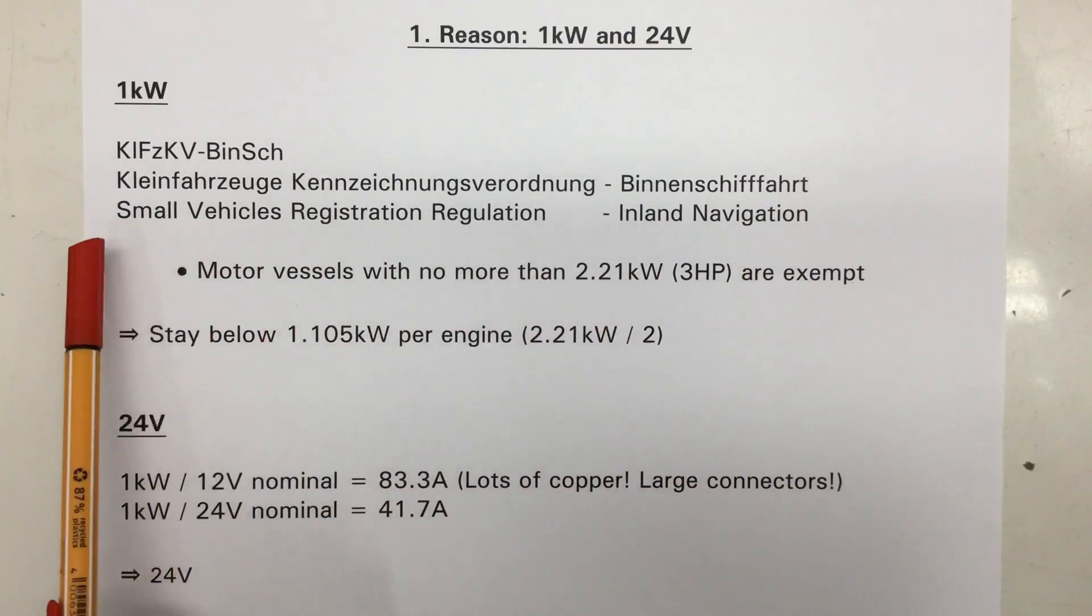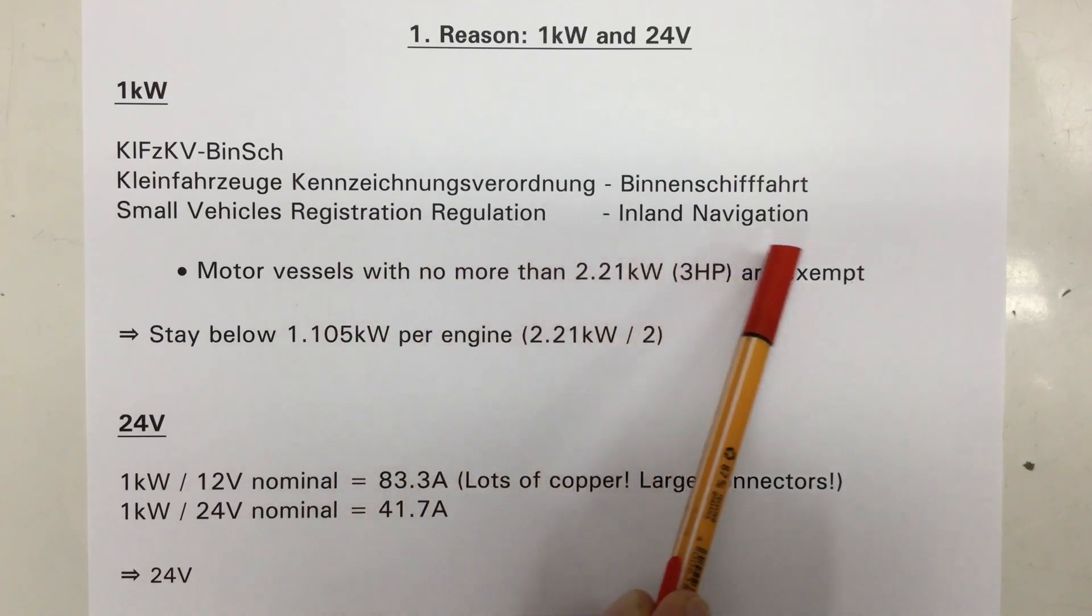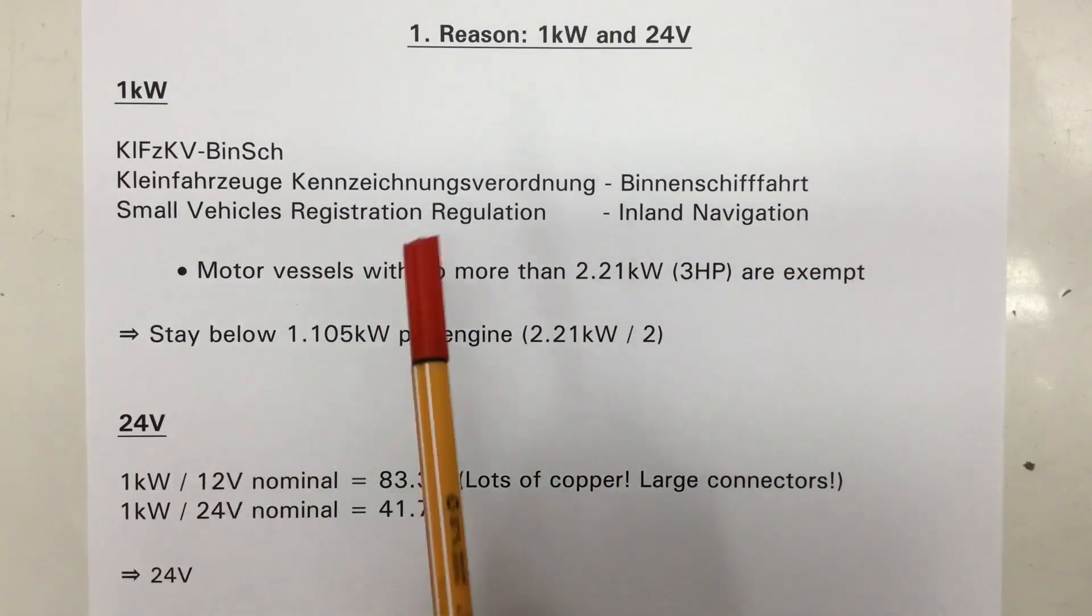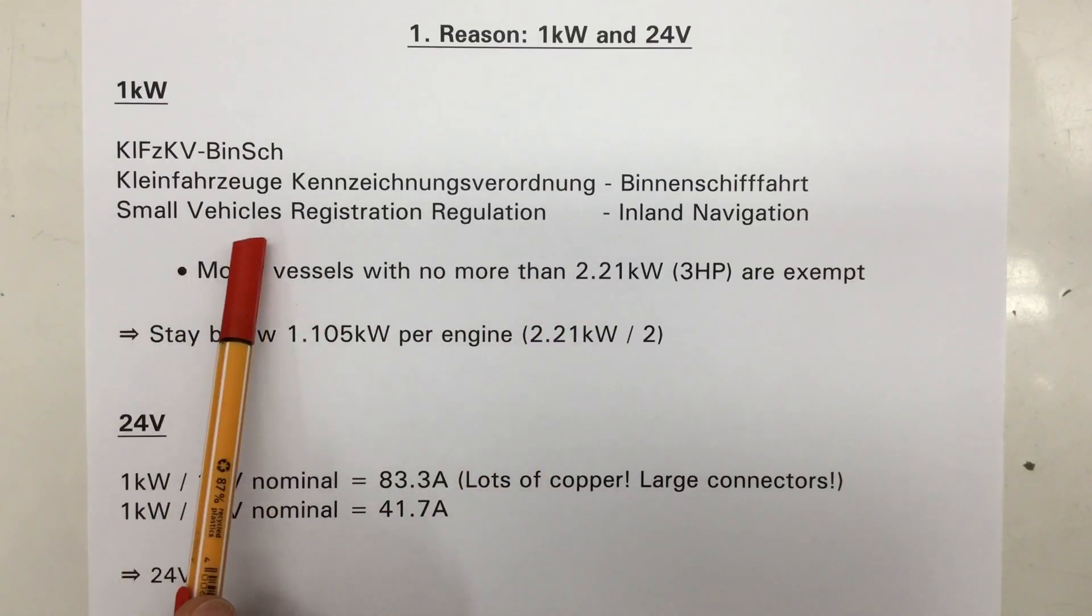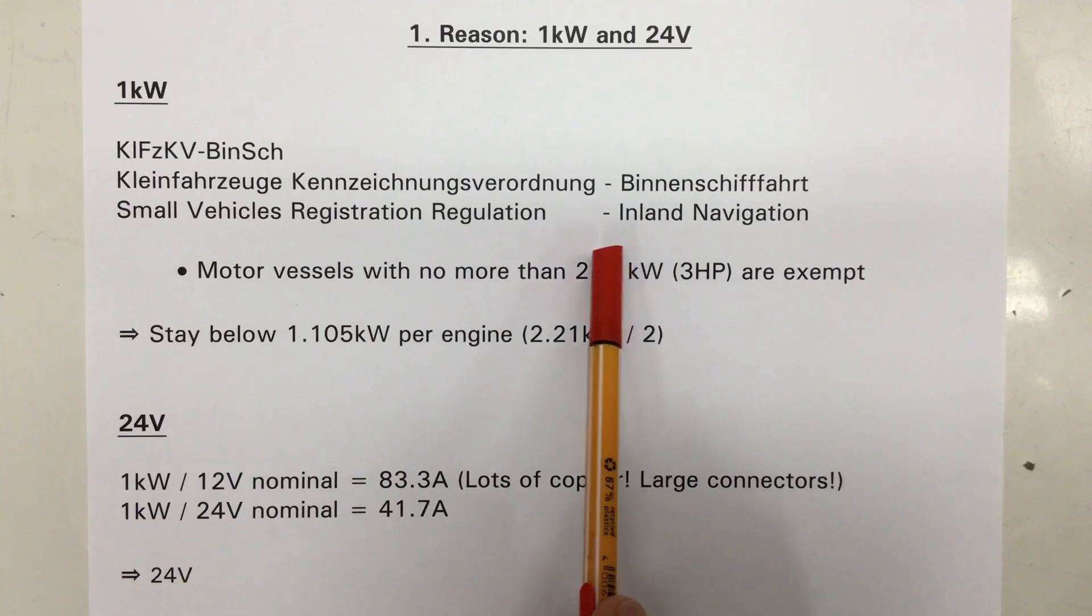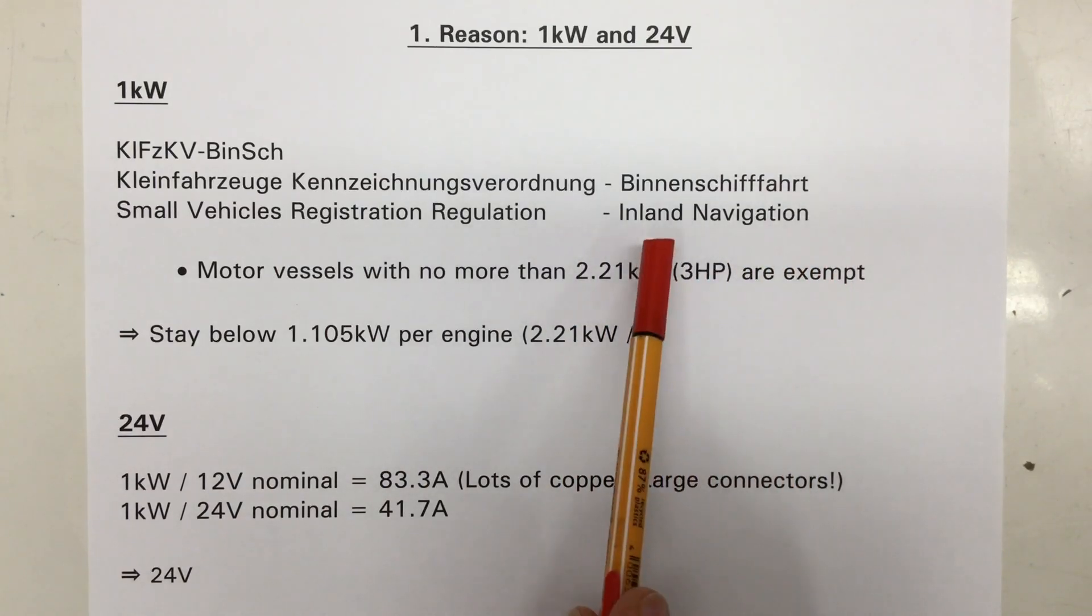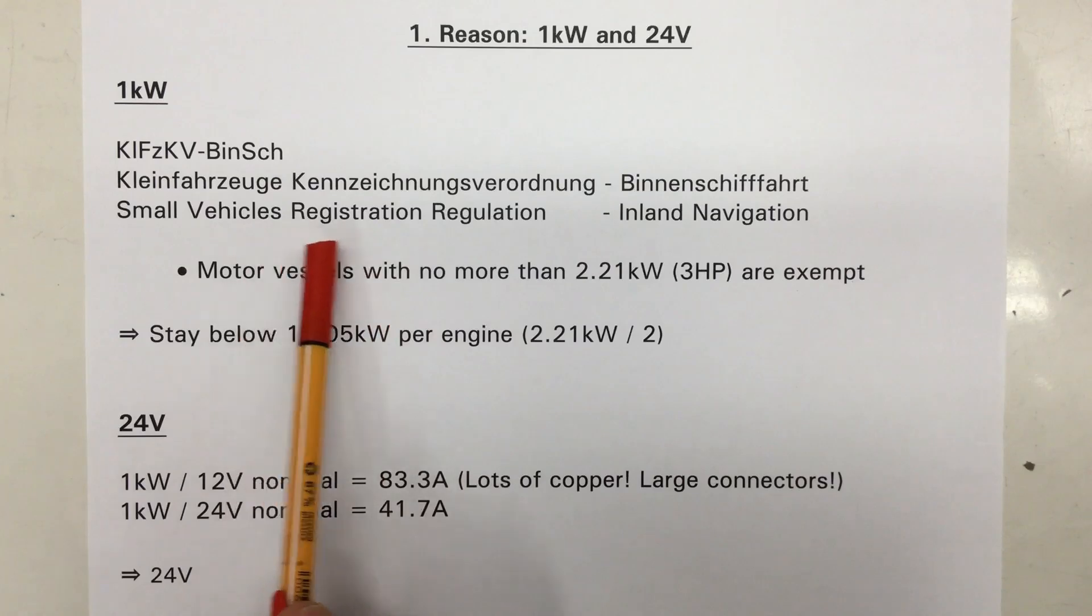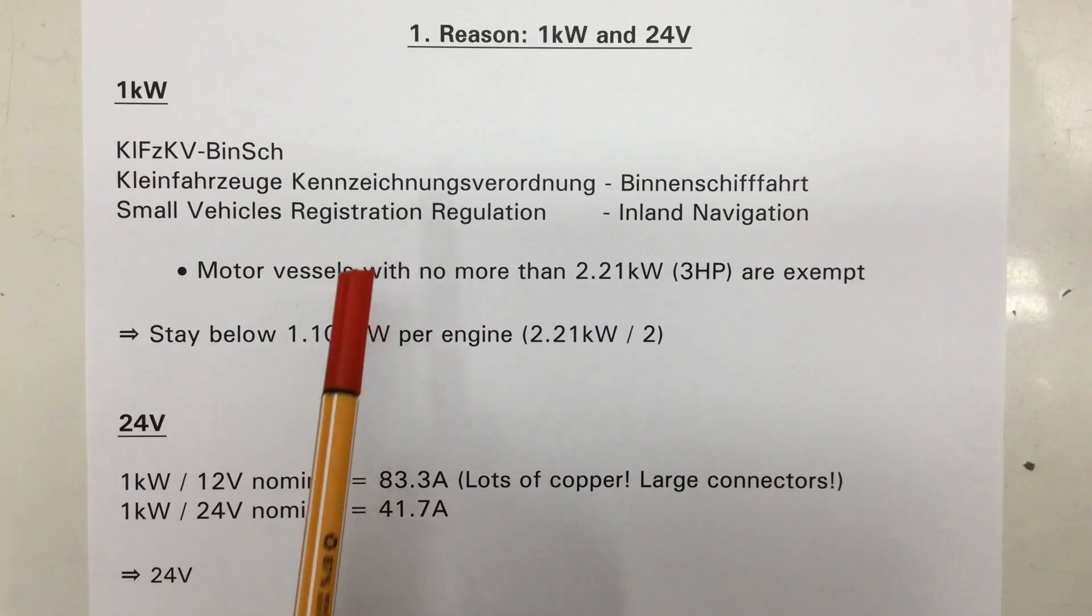And I'm specifically referring here to the KLFZ-KV-Binnsch or the Kleinfahrzeuge-Kennzeichnungsverordnung Binnenschifffahrt. Three F here in a row. You've got to love German. In English, Small Vehicles Registration Regulation-Inland Navigation. And that regulation states that all small vehicles, that is everything below 20 meters, on inland waterways, so rivers, lakes, channels, got to get a registration number and has to show that registration number on certain parts of the hull.